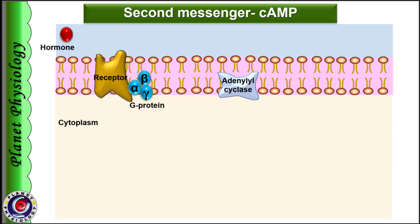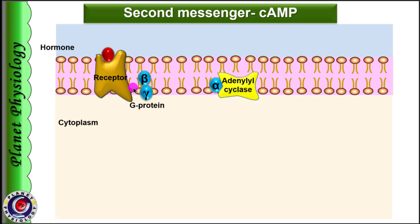Starting with cyclic AMP as second messenger — here is the cell membrane showing a lipid bilayer. This is the hormone receptor which is coupled with G protein. G protein has alpha, beta and gamma subunits. Here is the membrane-associated enzyme adenyl cyclase which acts as primary effector. The hormone molecule is represented in red color. Binding of hormone with its receptor causes formation of hormone-receptor complex and activates G protein, where GDP on the alpha subunit is replaced by GTP. As a result, the alpha subunit separates from the receptor and moves within the cell membrane to activate adenyl cyclase.